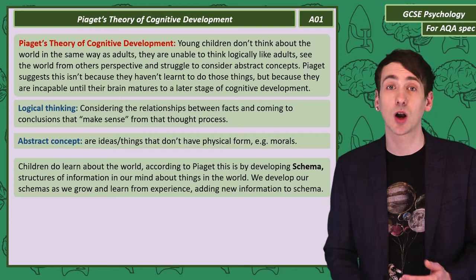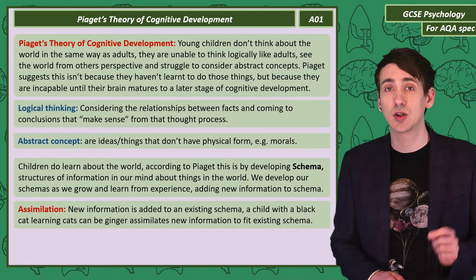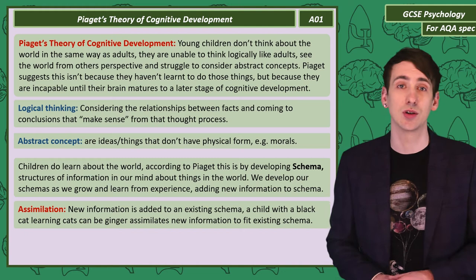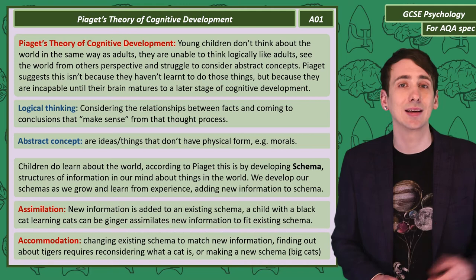Assimilation is a small change when we add new information to an existing schema. So a child who has only had experience with their own black cat, seeing a ginger cat, will add this information to their cat schema — cats can be black or ginger. Accommodation is the changing of the schema itself to match the new information. So a child visiting the zoo and seeing lions and tigers will need to reconsider what a cat is, or make a totally new schema of big cats.